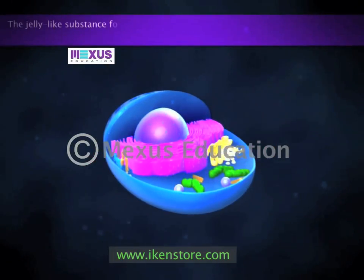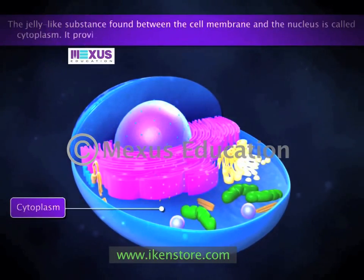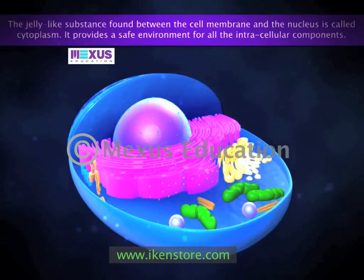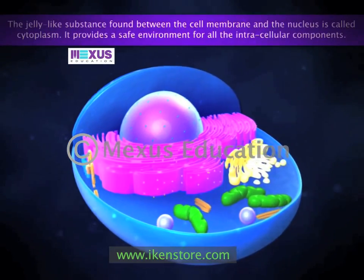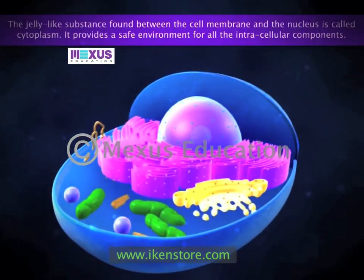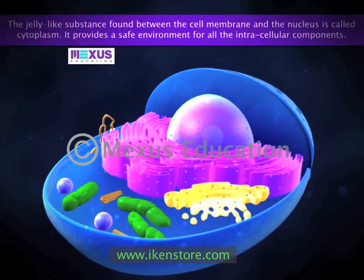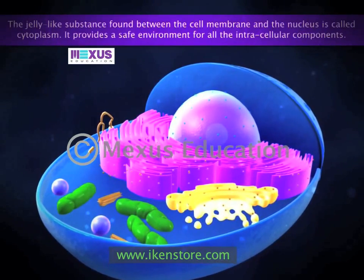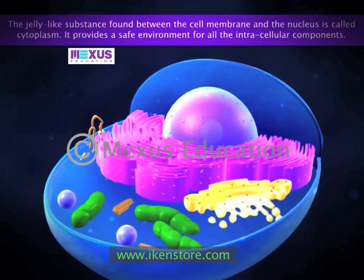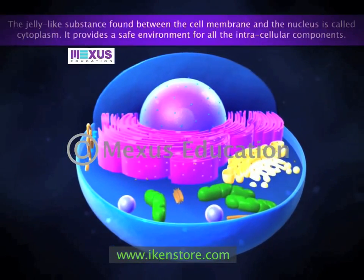Between the cell membrane and the nucleus is the cytoplasm. This jelly-like substance provides a safe environment for all the intracellular components. The cytoplasm is a highly complex solution composed of water, proteins, carbohydrates, and lipids. Many chemical reactions critical to cell function take place in the cytoplasm.